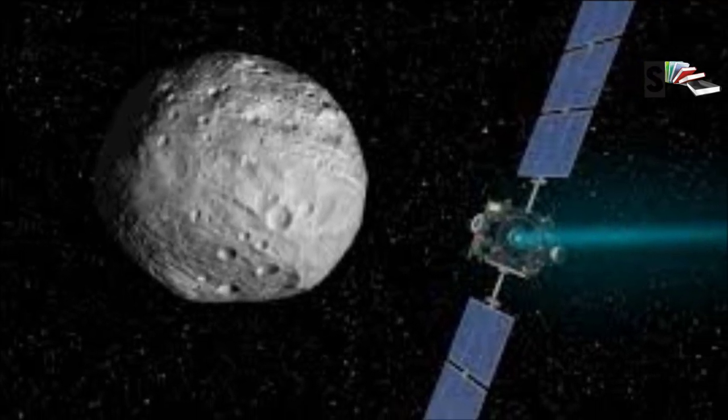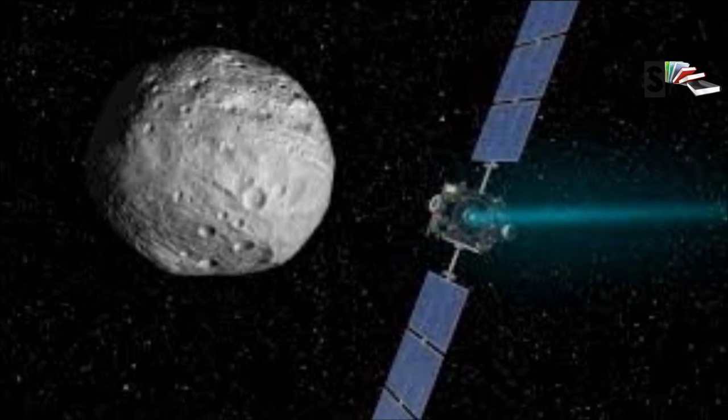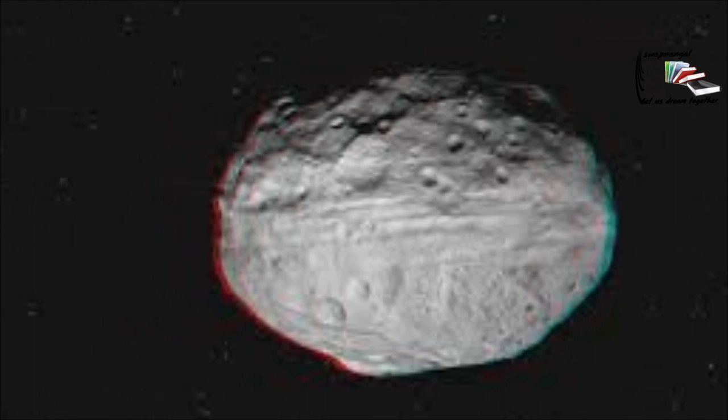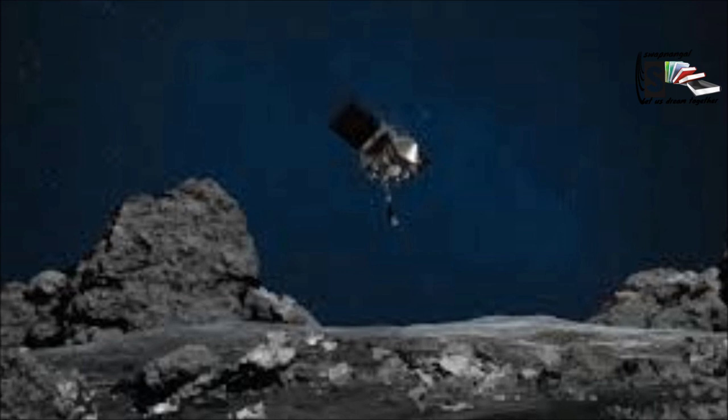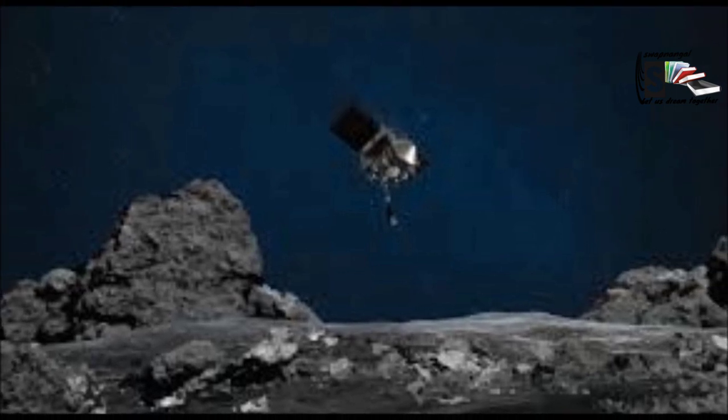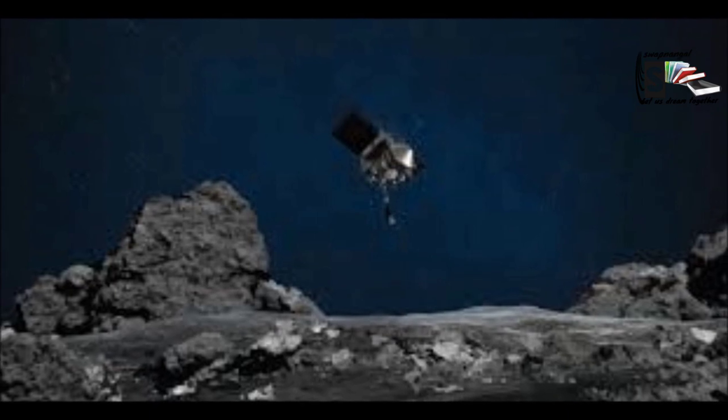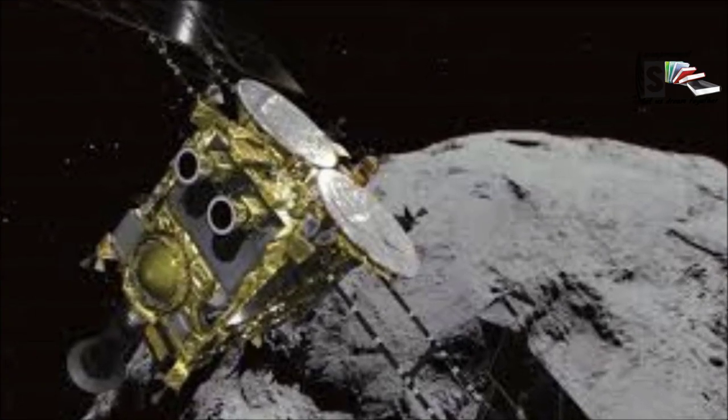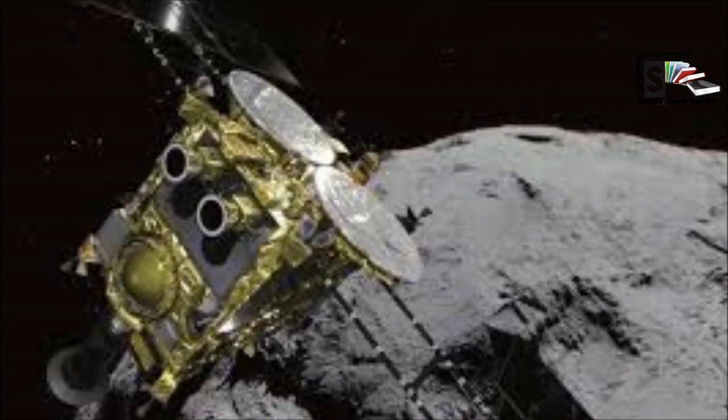NASA's Dawn spacecraft, launched in 2007, orbited and explored asteroid Vesta for over a year. Two robotic spacecrafts are currently exploring asteroids up close. NASA's OSIRIS-REx is in orbit at asteroid Bennu and Japan's Hayabusa2 is preparing to collect samples from asteroid Ryugu.